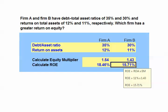It's not surprising that Firm A has a higher return on equity, as it has a higher return on assets — 12% compared to 11% — and it has higher financial leverage, with a 35% debt to asset ratio compared to 30% for Firm B. Both of these factors lead to a higher return on equity.